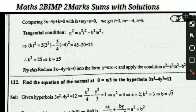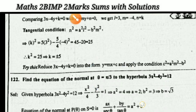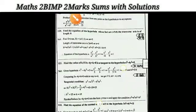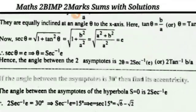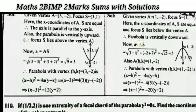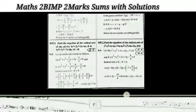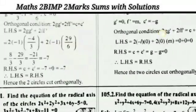Find the equation of the normal at θ = 5/3 to the hyperbola. These are all the important two-mark questions from Coordinate Geometry for Maths 2B. In the next video I will post all the two-mark questions from the topic Calculus for Maths 2B.